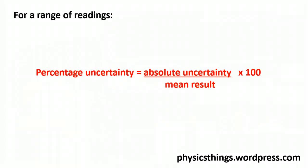Of course, as with our absolute uncertainties, usually we'll be dealing with a range of readings, and that means that we will have got a result from a mean. Apart from that, we calculate the percentage uncertainty in exactly the same way. We take our absolute uncertainty, which for a range of readings is half the range, divide it by the mean result, and multiply it by 100.